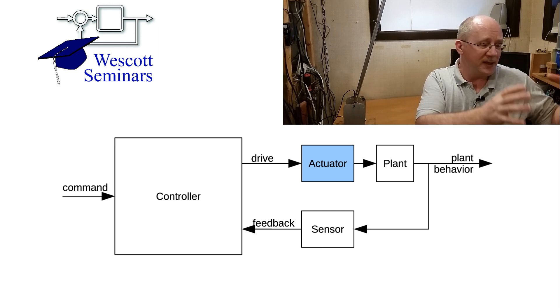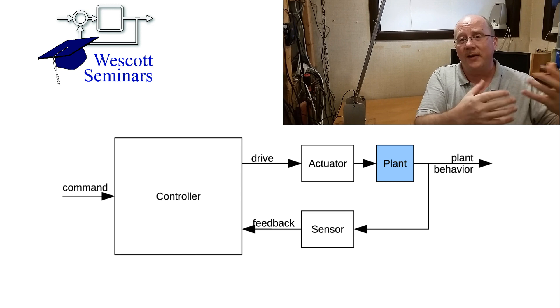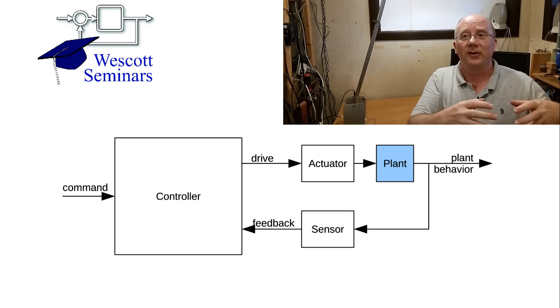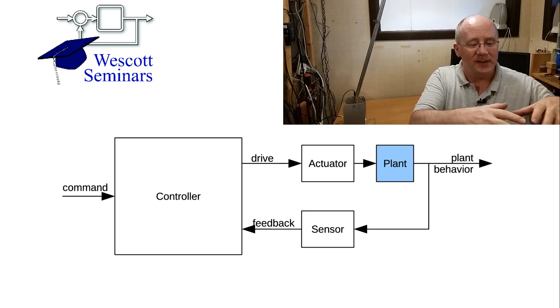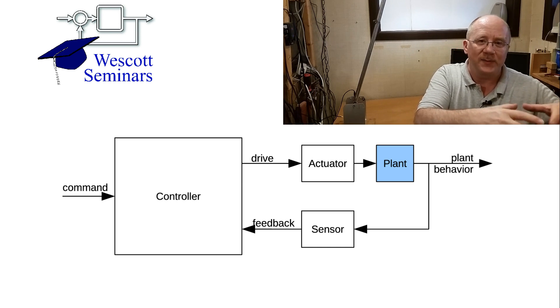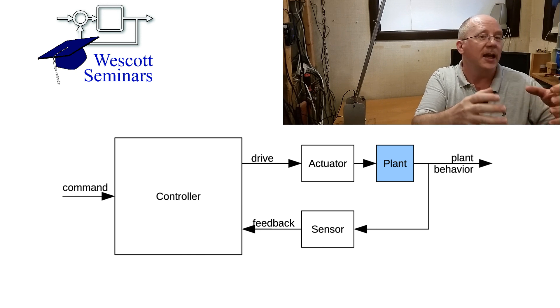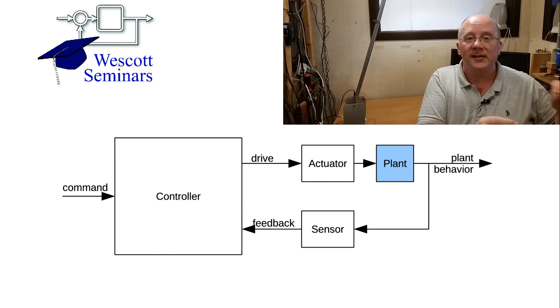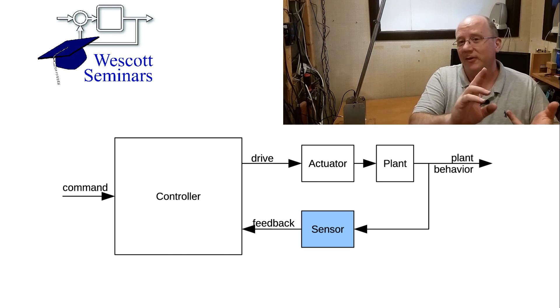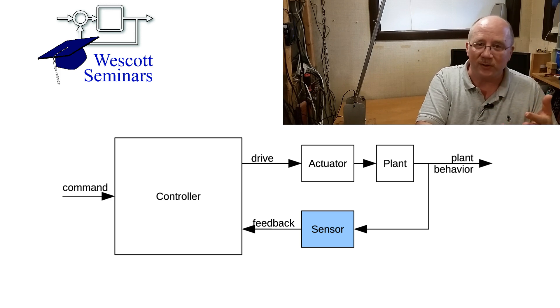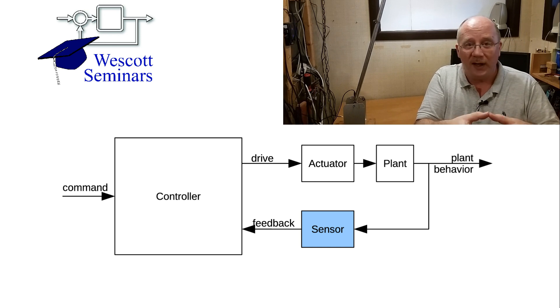And then that actuator feeds into the plant. And the plant can be, it might be your motor. If you have a motion control system, it would be the motor. If you are controlling the temperature of something, then that might be a heater, or it might be a refrigeration unit. The plant is the thing that's being acted upon. The plant is the thing that is being driven to what you want it to do. And then that plant has some desired output. And that desired output is measured by the sensor. And the sensor is what takes the motor speed, or some position of some mechanism, or the temperature of something, and it turns it into voltage, and then some number that can be read by the processor.